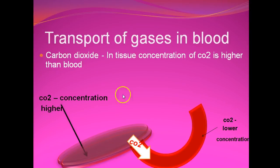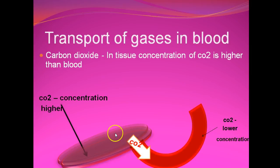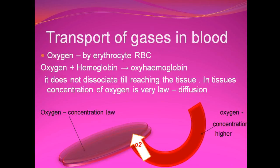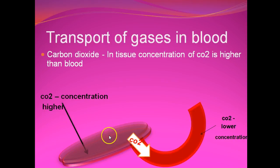In the case of carbon dioxide, the process is reversed. After catabolic activities, the concentration of carbon dioxide is higher in tissues than in the blood vessels. So diffusion takes place from higher concentration to lower concentration — carbon dioxide moves from tissues to the blood.